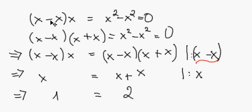We get these two expressions, so x minus x in brackets, times x, equals x to the power of 2 minus x to the power of 2, which equals 0.